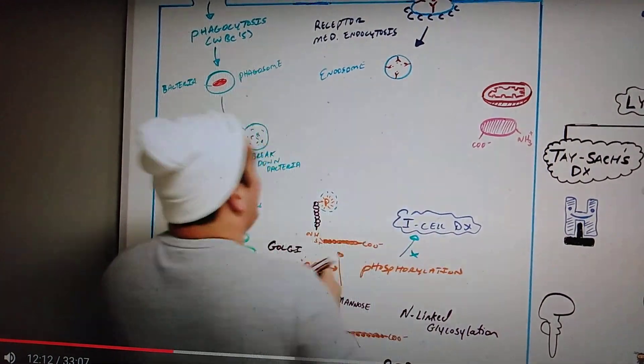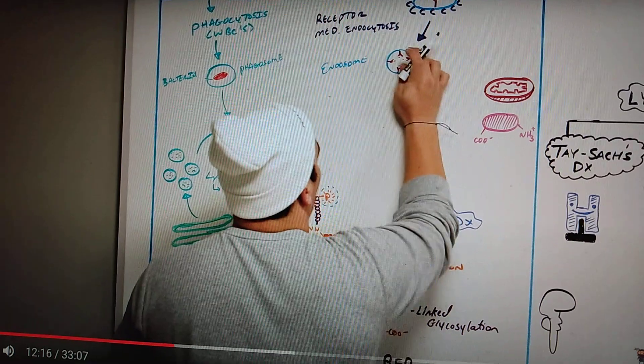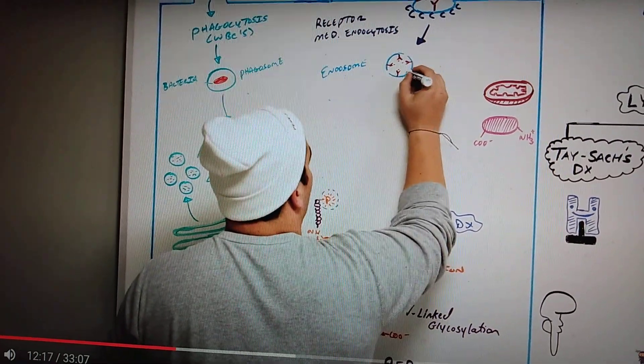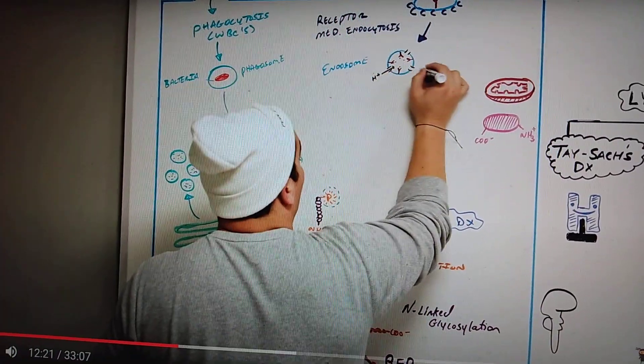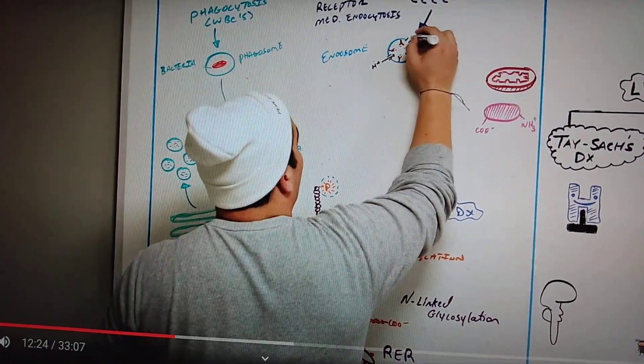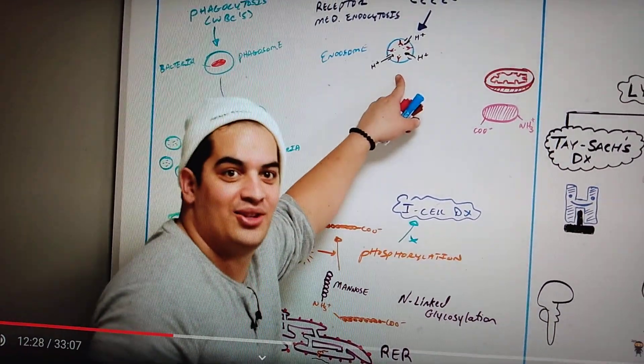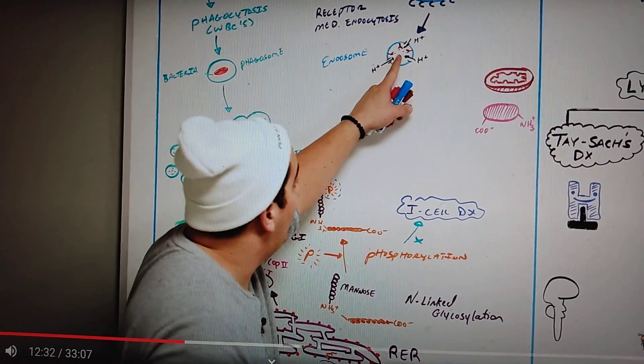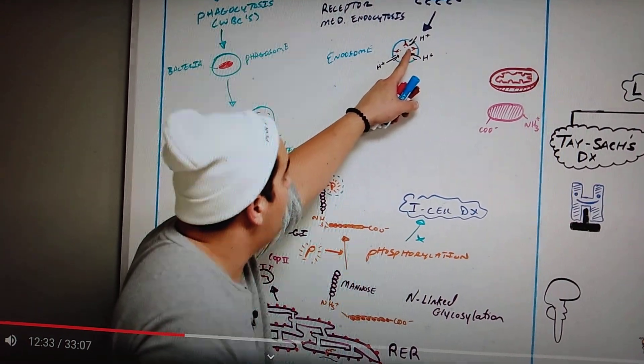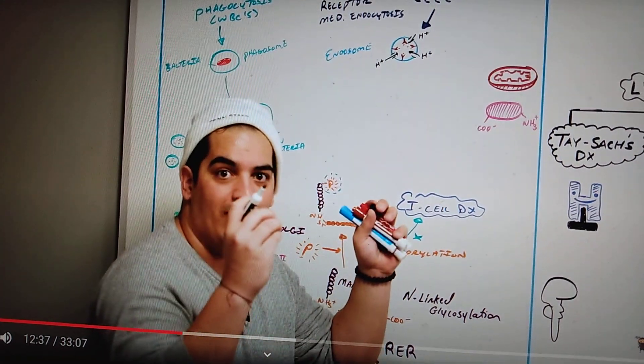Guess what happens with this endosome? The endosome has little pumps on it, little proton pumps, and these little proton pumps they start pushing in lots of protons making this environment very acidic. You want to know what those protons do? Whenever they get pumped into this environment they make the bond between the LDL receptor and the LDL very weak so that they disassociate from one another.